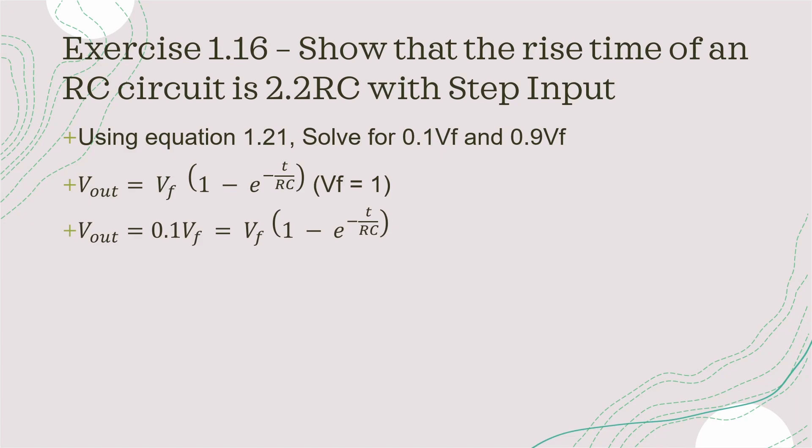So putting these numbers in, V out is equal to 0.1 times the final voltage is equal to the equation that we have here. We know that V f is equal to 1, so the equation can be simplified to 0.1 equals 1 minus e to the power of minus t over RC.